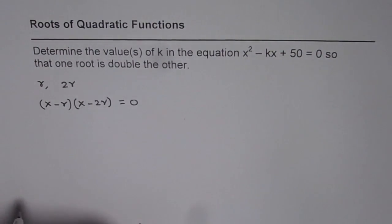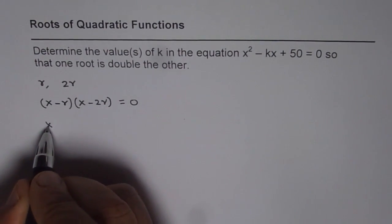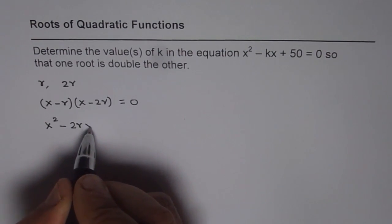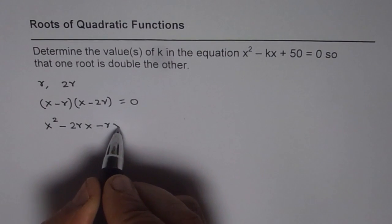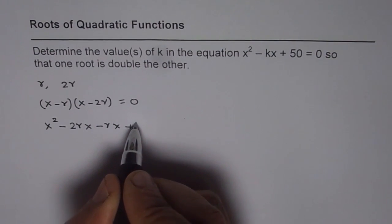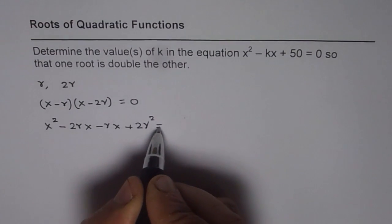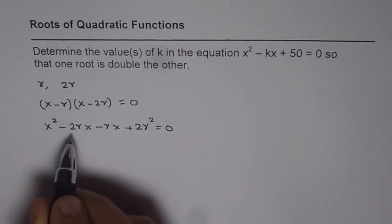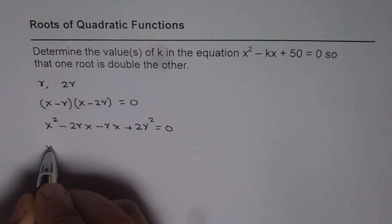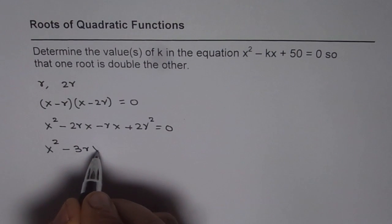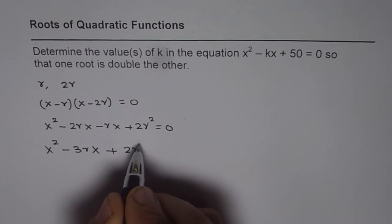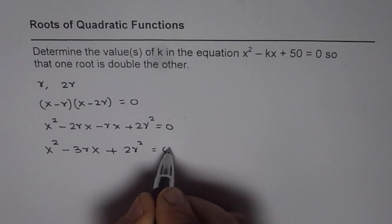Let us expand this. We get x² - 2rx, then we multiply by -r, get -rx + 2r² = 0. We can combine the like terms and then we get x² - 3rx + 2r² = 0.